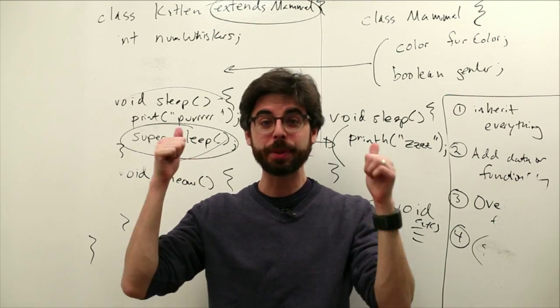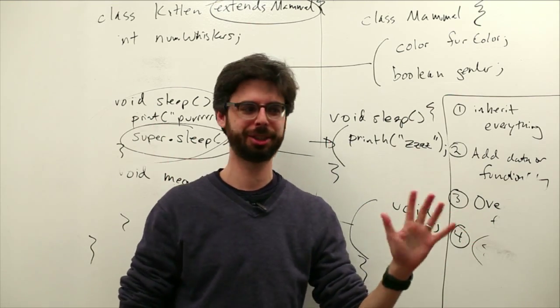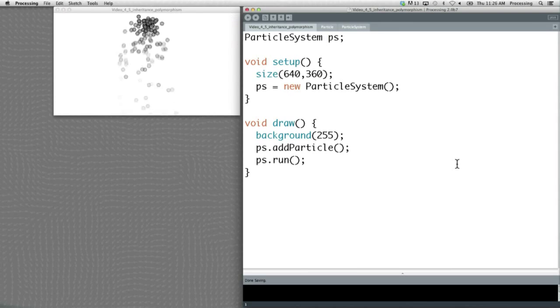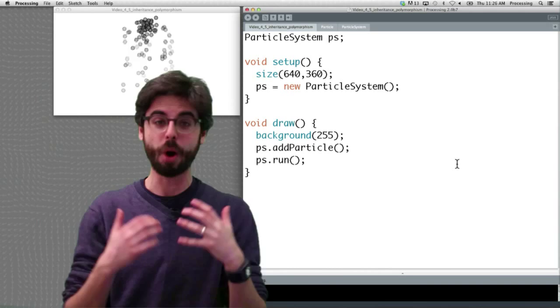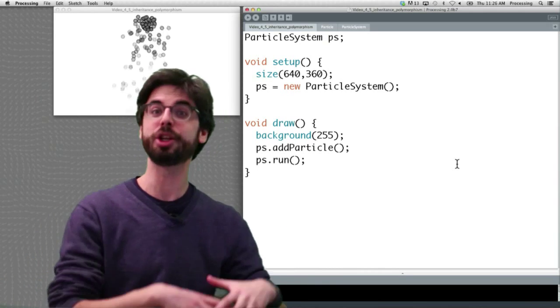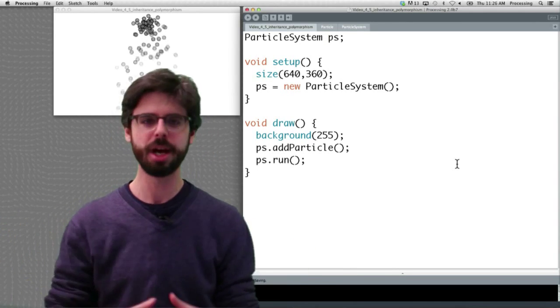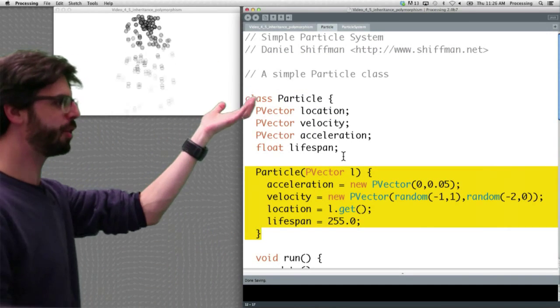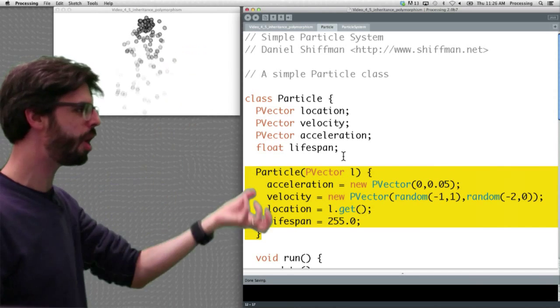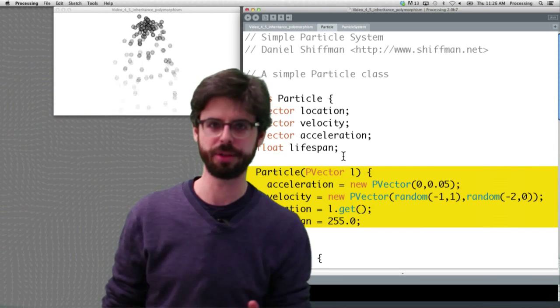Now what I want to do is apply this way of thinking to our particle system example. So here is our particle system example. It's a simple program with a particle system class which manages an array list of particle objects. The particle objects are simple entities that have a location, velocity, acceleration, and they fall with gravity. You see them there on the screen.